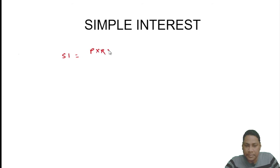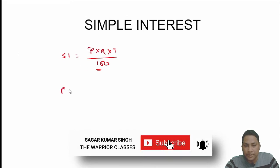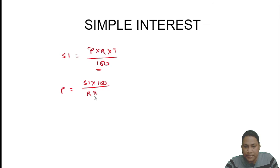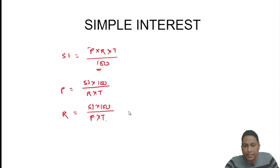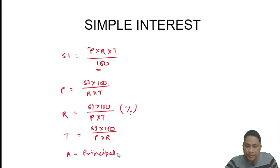The formula of simple interest is: SI = (Principal × Rate × Time) / 100. From this we can also calculate the principal: P = (SI × 100) / (Rate × Time). The rate of interest is: R = (SI × 100) / (P × T), expressed in percentage. Time is: T = (SI × 100) / (P × R). And the amount equals Principal plus Interest.